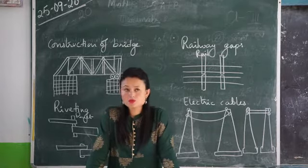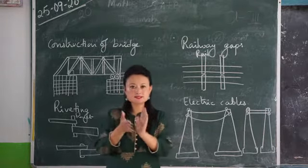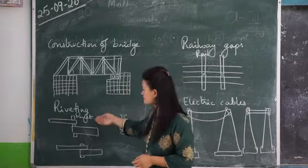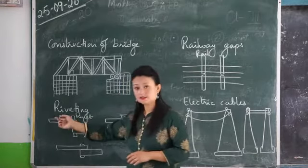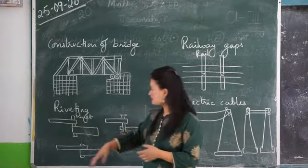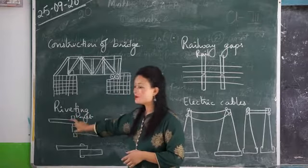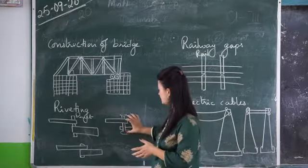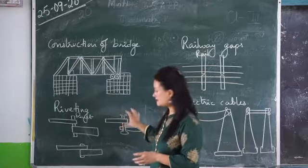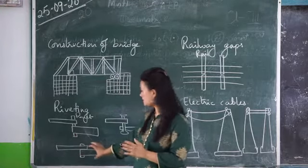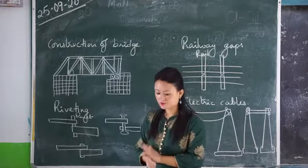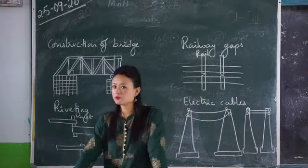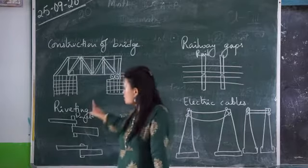This is what riveting is. You take two steel plates, make a hole, and put a rivet in. You start heating it — it becomes very soft and easier to shape. Then it becomes very hot. You let it cool, and when it cools, they contract and the two metals join together. This is how boilerplates are made — by the process of riveting.